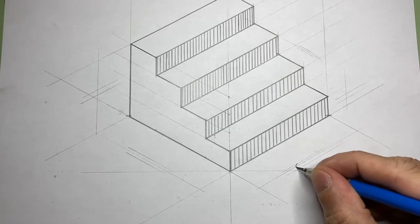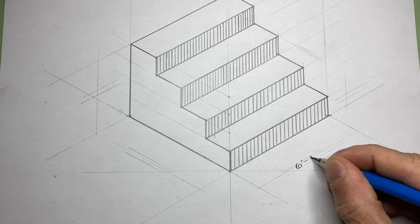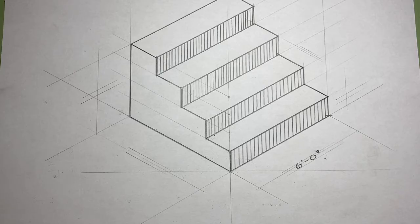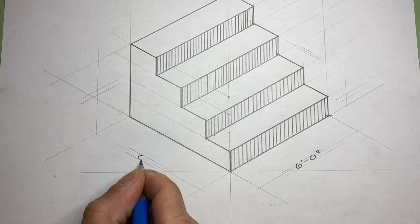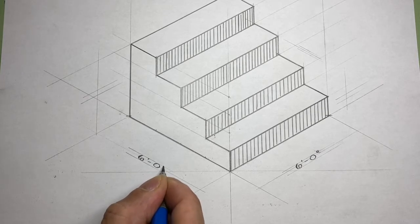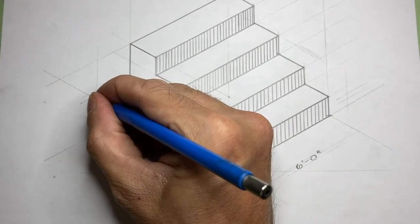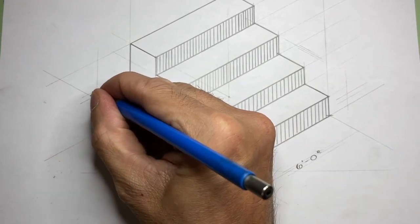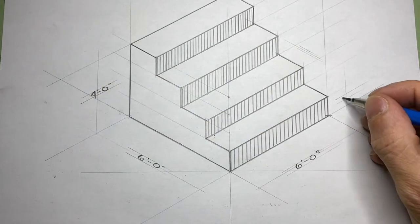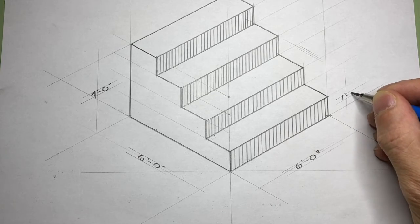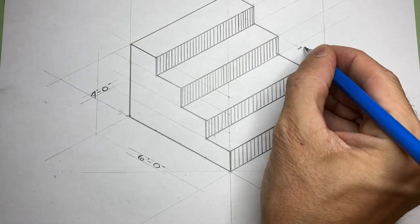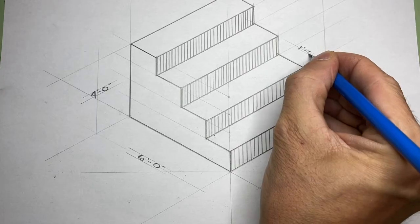Now, I'll add the dimensions. The width of the stair unit is six feet. The depth is also six feet. The height is four feet. The height of the steps or the rise is one foot and the depth of the tread is one foot six inches.